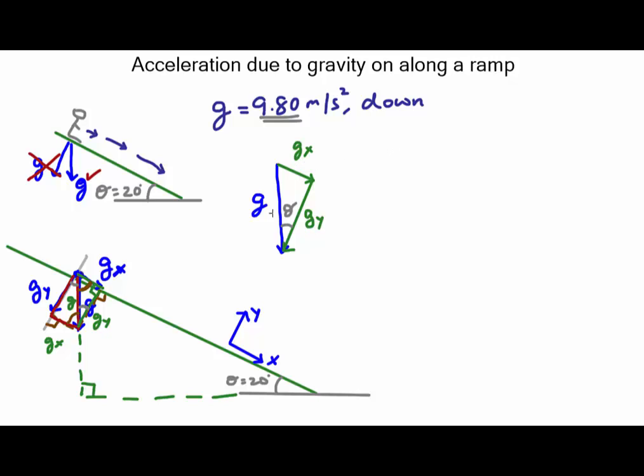So for gx it happens to be opposite the angle theta, I know the hypotenuse g, so the function I need to use is sine. And so I get sine of 20 degrees equals the opposite which in this case is gx divided by hypotenuse which is g which I can write as 9.80. And by simplifying I will get gx is 9.80 times sine of 20 degrees which your calculator will tell you is 3.35 meters per second squared down to three significant digits that we had going into it.